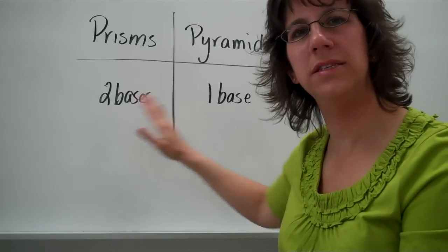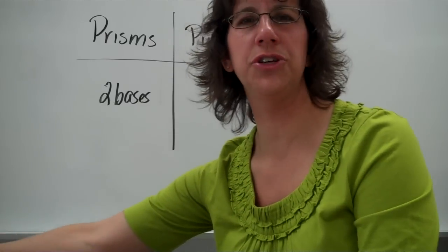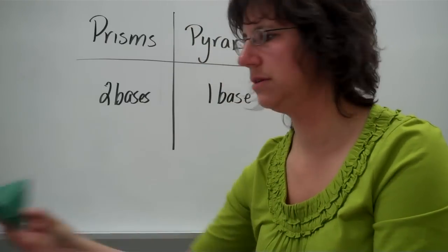Again, prisms have two bases. Pyramids have one. That's real important. If you haven't written that down, jot that down. And a lot of times you're going to name your shape based upon the bottom or the base.